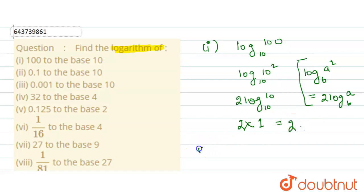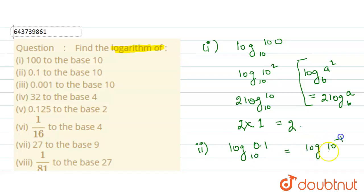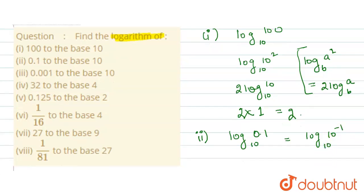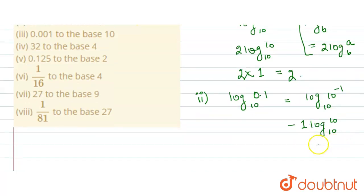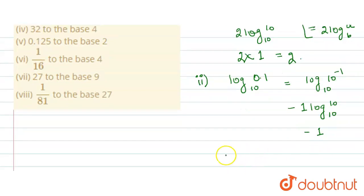Moving on to the second part, we need to calculate the value of log 0.1 to the base 10. I can write 0.1 as 10 raised to the power minus 1. Applying the same property, minus 1 comes outside the log, giving minus 1 times log of 10 to the base 10. Since log 10 to the base 10 equals 1, the answer is minus 1.